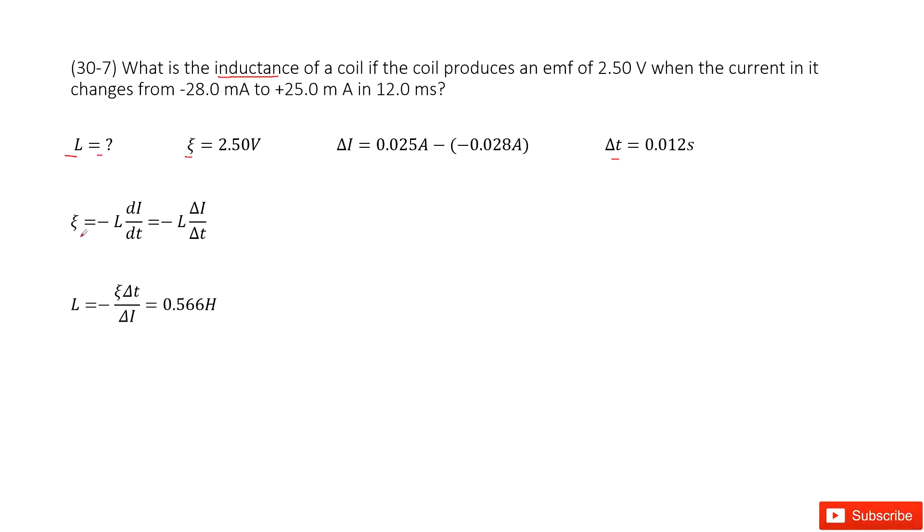We can see epsilon is connected with L and di/dt, the derivative of current with time. So we can write it as the change of current divided by delta t.